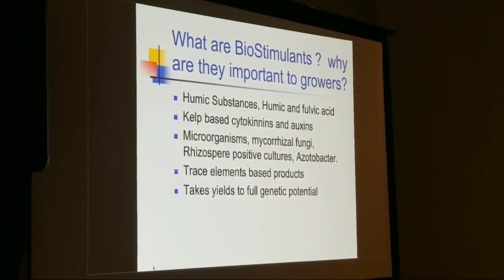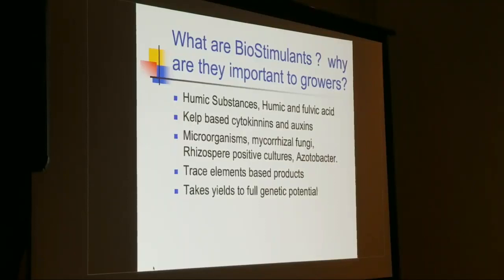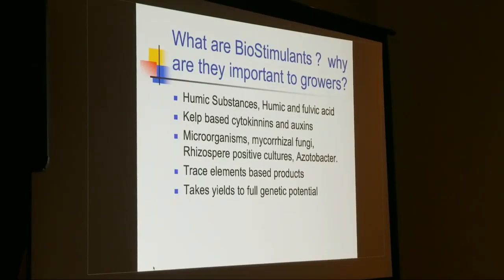Trace elements are crucial because cannabis produces so many cannabinoids and other substances — it needs trace elements in a specific balance. In established wild stands over the years, the plant tends to balance the soil to a neutral or slightly acidic pH. Humic substances are amphoteric — they can balance pH from high alkaline to more neutral or acidic. The yield potential is tremendous; customers are getting as much as four pounds per plant, which is unusual but achievable. The plant has a much higher genetic potential than most people ever see.